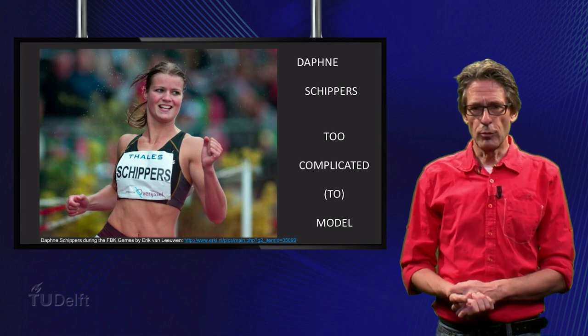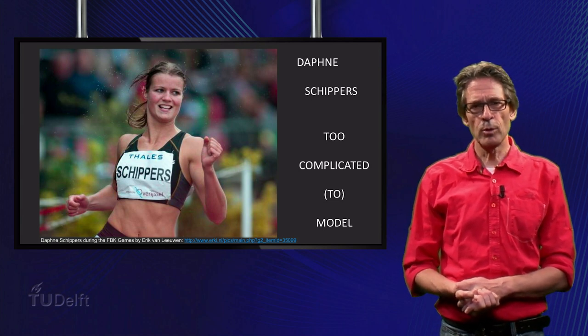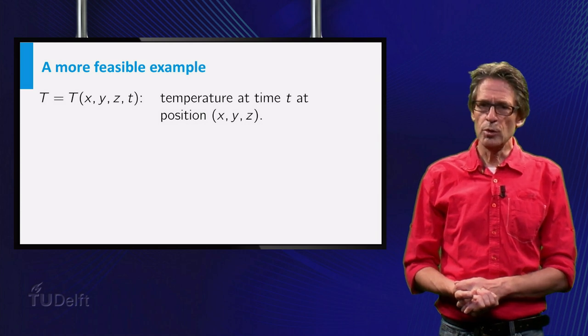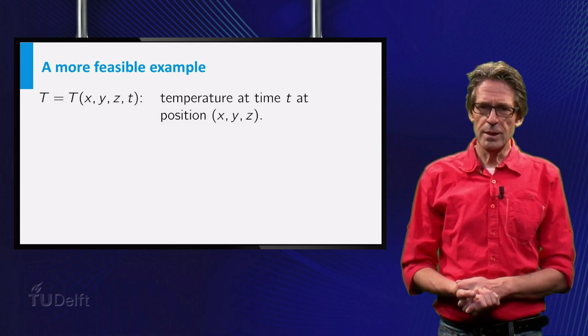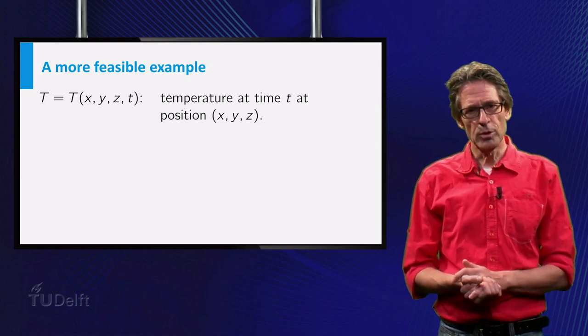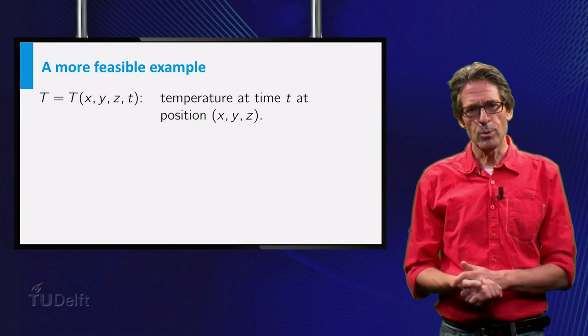For an example of a function of four variables that might be more manageable, consider the temperature T in the atmosphere above Holland during one week. Then T is a function of the position and of the time, where the position can be modeled using three space variables x, y, z.